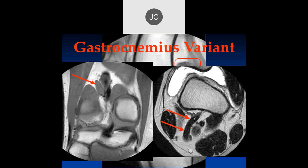It's a good idea to let the surgeon know that it's there if they're operating in the posterior aspect of the knee. Also worth asking whether it could compromise adjacent nerves, since they run in close approximation.